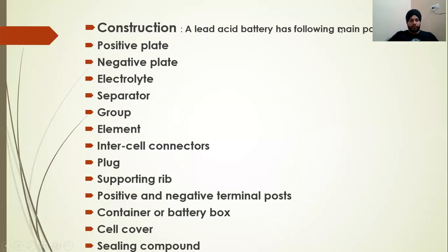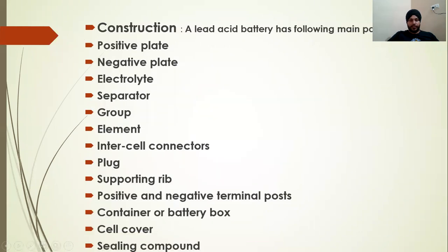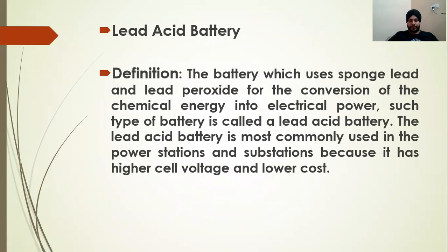Good morning. In the last lecture we studied what is a lead acid battery, the definition, different chemicals used in a lead acid battery, and different types of parts. A lead acid battery uses lead peroxide and sponge lead as electrodes with an electrolyte of dilute sulfuric acid.